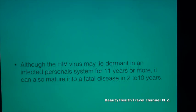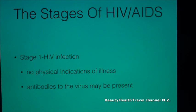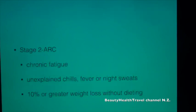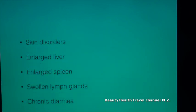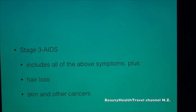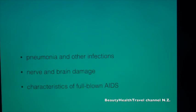Although the HIV virus may lie dormant in an infected person's system for 11 years or more, it can mature into a fatal disease in 2 to 10 years. The stages of HIV/AIDS are: Stage 1 — HIV infection with no physical indications of illness but antibodies to the virus may be present; Stage 2 — AIDS Related Complex (ARC), with chronic fatigue, unexplained chills, fever or night sweats, 10% or greater weight loss without dieting, skin disorders, enlarged liver or spleen, swollen lymph glands, and chronic diarrhea; Stage 3 — full AIDS, including all prior symptoms plus hair loss, skin and other cancers, pneumonia and other infections, nerve and brain damage.